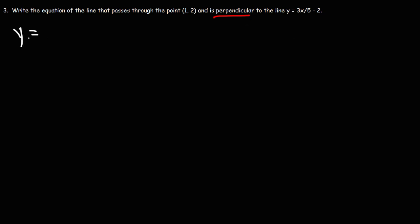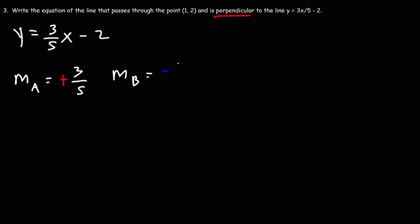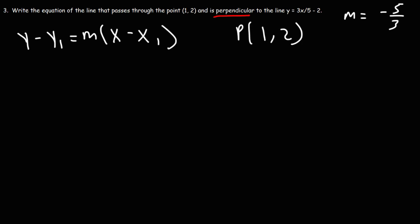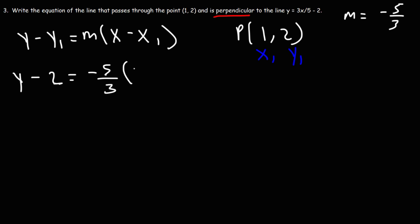Now let's focus on this problem. We want to write the equation of the line perpendicular to y equals 3/5 x minus 2. The slope of line A is positive 3/5. The slope of line B — the perpendicular line — is going to be negative 5/3. So we use the point-slope formula with y1 equal to 2, m equal to negative 5/3, and x1 equal to 1.